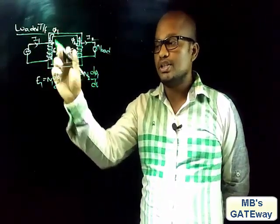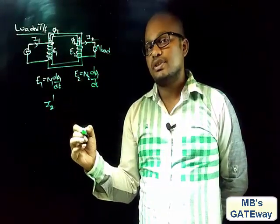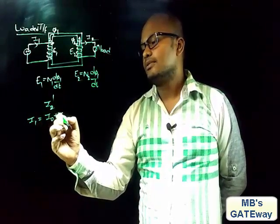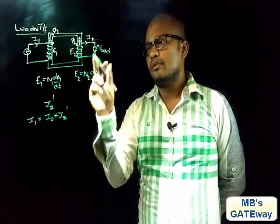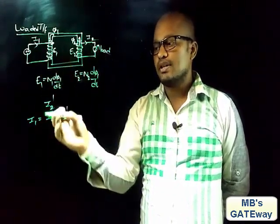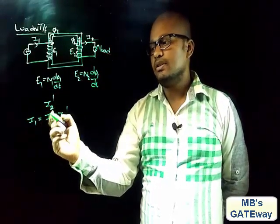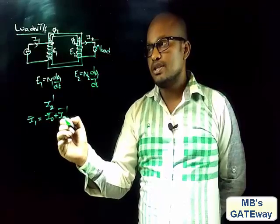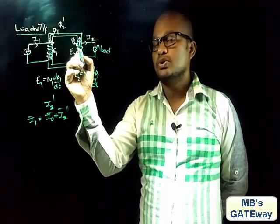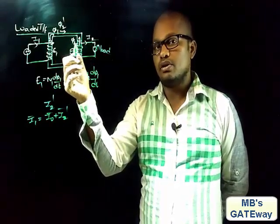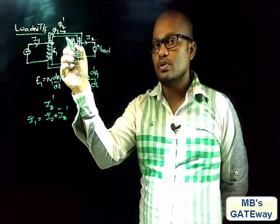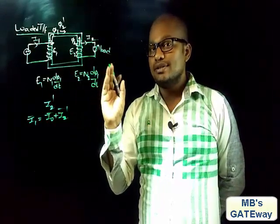To maintain E1, the transformer will draw more input current from the supply. That extra current drawn to maintain E1 is represented as I2'. So I1 equals the no-load current I0 plus I2', because without load there is a current I0 in the primary winding, and with load there is an extra current I2'. Because of this extra I2', there is a flux φ2', which is equal and opposite to φ2. As φ2' and φ2 are equal and opposite, they cancel each other, and the only flux remaining in the core is φ1.